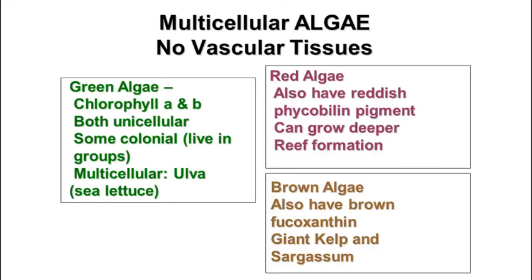The red algae are red because they also have a pigment called phycobilin. This allows them to live at deeper depths in the water, because the most energetic wavelengths of light — the blue and purple wavelengths — penetrate deepest. The red wavelengths have the least energy and are filtered out first, so red algae use the blue and purple light and reflect red via the phycobilin pigment. The brown algae also have a brown pigment called phycoxanthin and include giant kelp and sargassum. Sargassum is the type of seaweed seen washed up on the beach at Galveston.